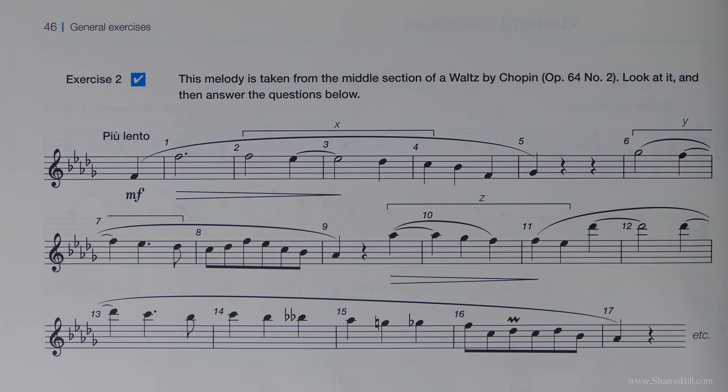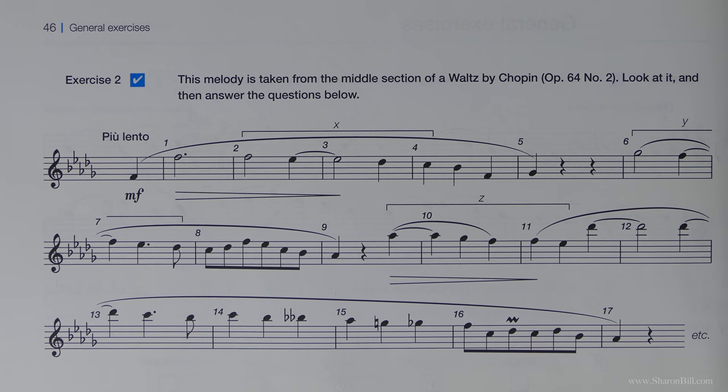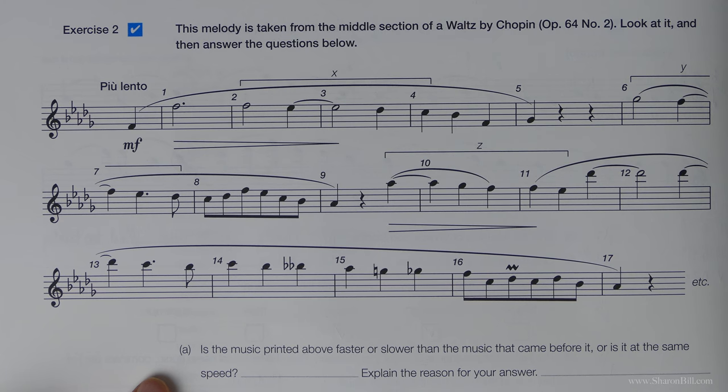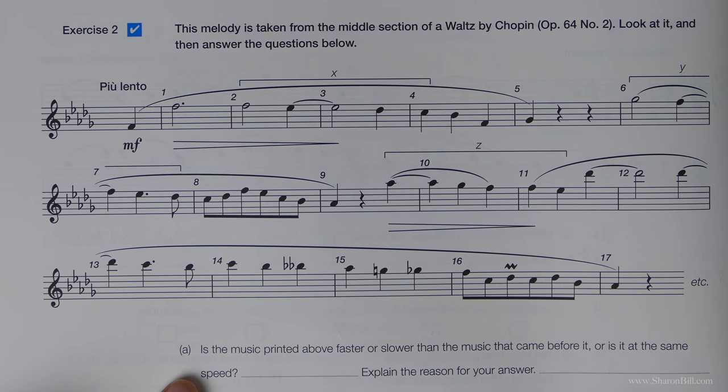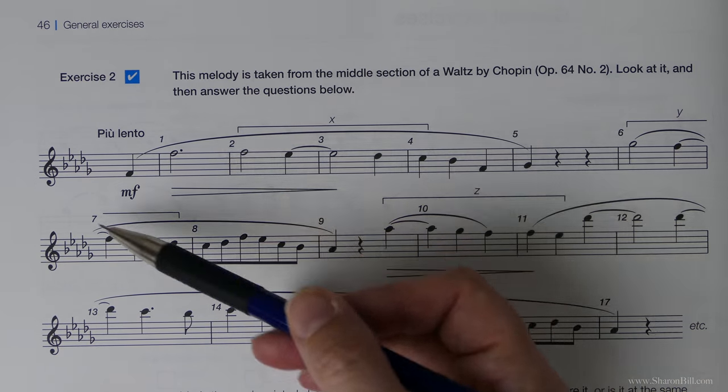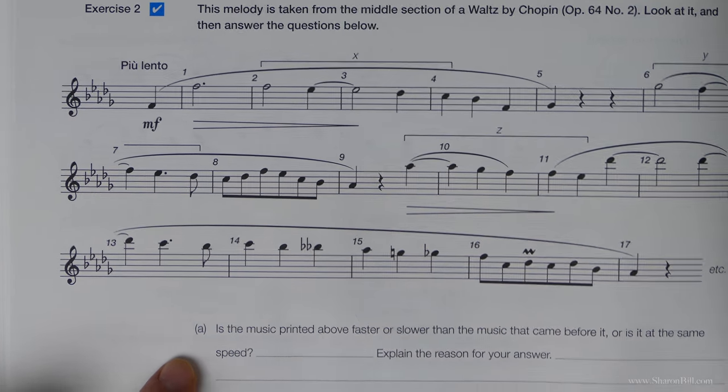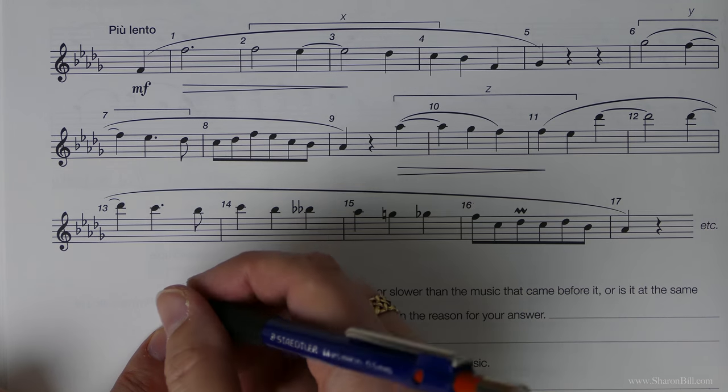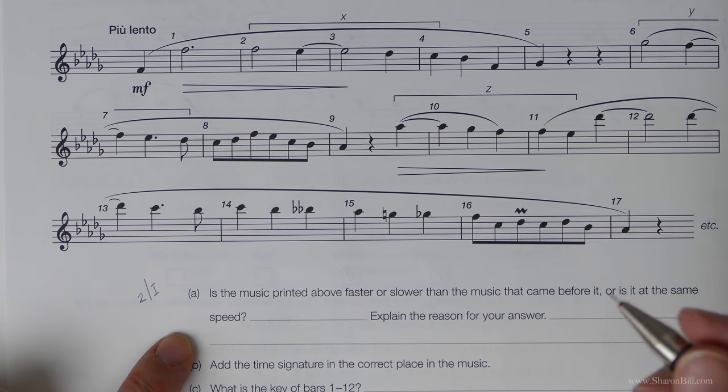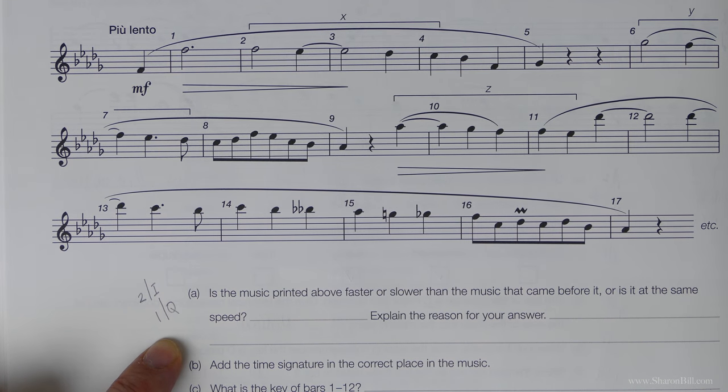So we're referring to this section of music. It's a Chopin Waltz. Very nice. And then we're going to answer these questions. So this first question, is the music printed faster or slower? The clue that you're after is the tempo direction here. And you can find the answer to that. It refers to some of the performance directions found in grade two, section I, and also right the way back to grade one, section Q.